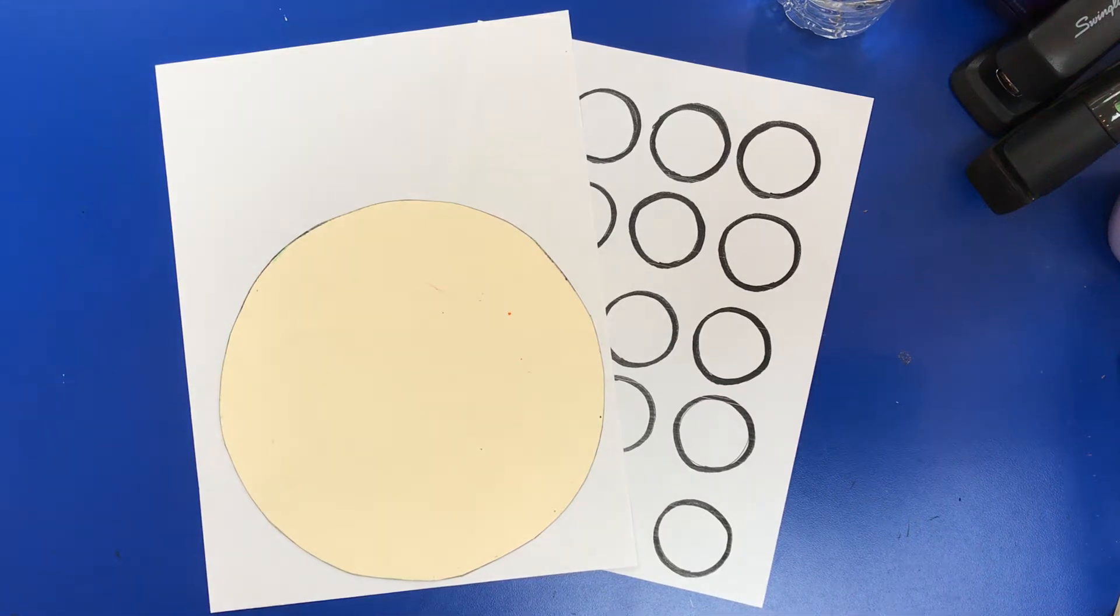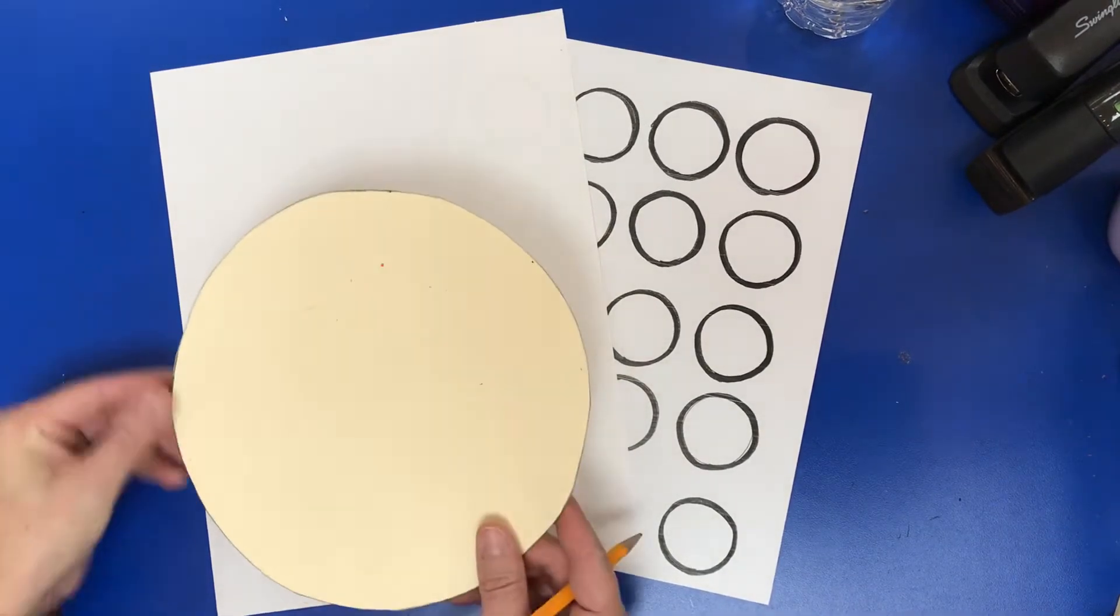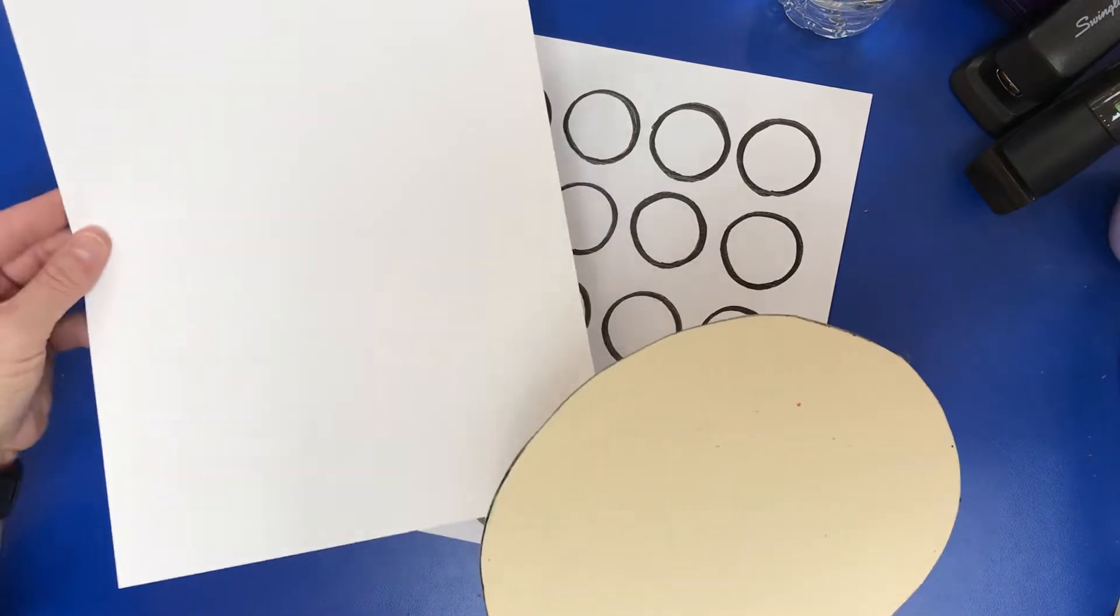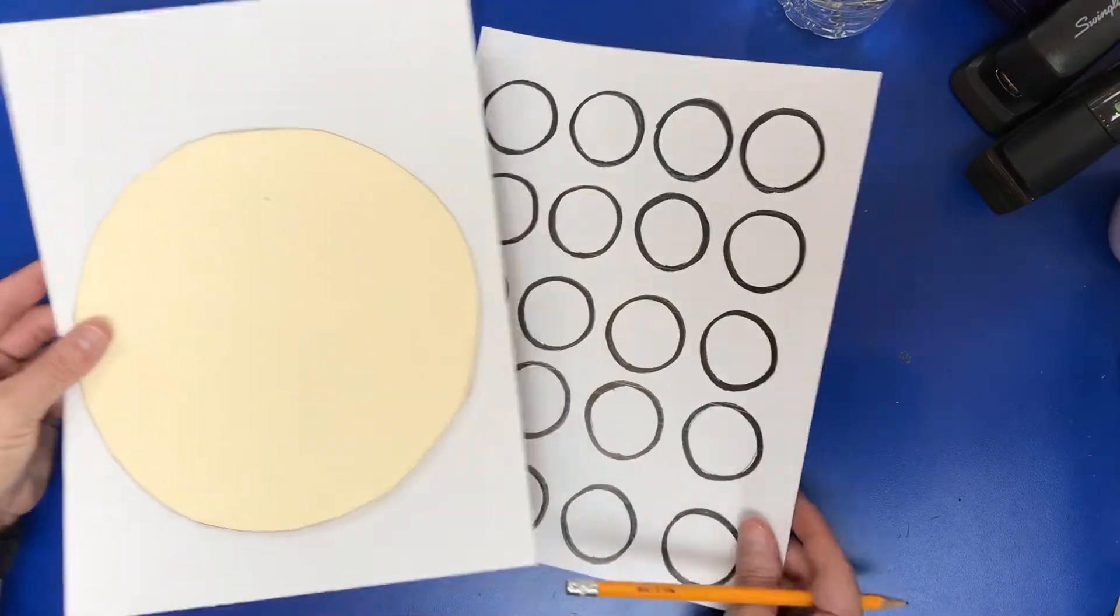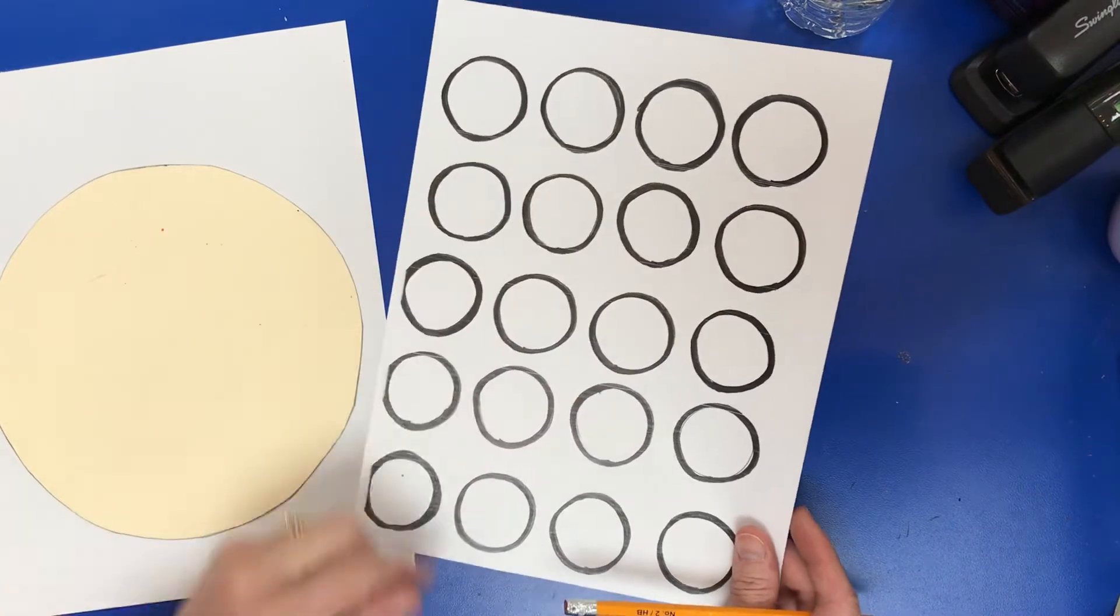Your next step is to go up to my table and find a circle pattern, get a piece of white paper, and pick up a paper that has all sorts of circles on it.